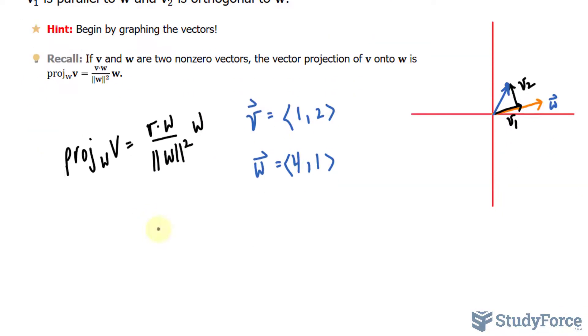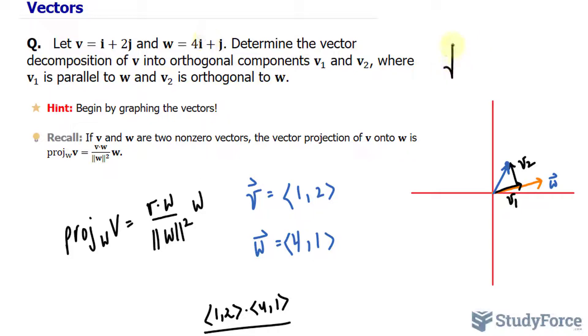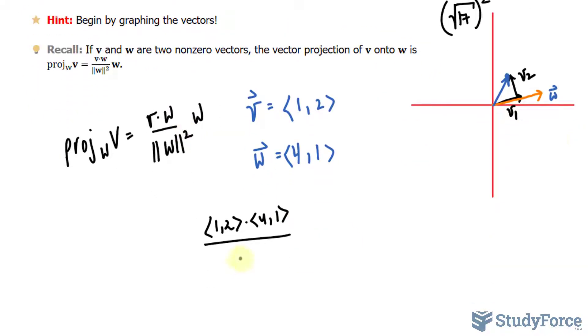Let me fill this in. I have the dot product of ⟨1, 2⟩ and ⟨4, 1⟩, that's at the top. At the bottom, we need the magnitude of W, and the magnitude can be found using the Pythagorean theorem. So we have 4² + 1²—that's equal to √17—and we're raising that to the power of 2 because it's being squared. So we have 17 at the bottom, and that is being multiplied to the vector W, ⟨4, 1⟩.